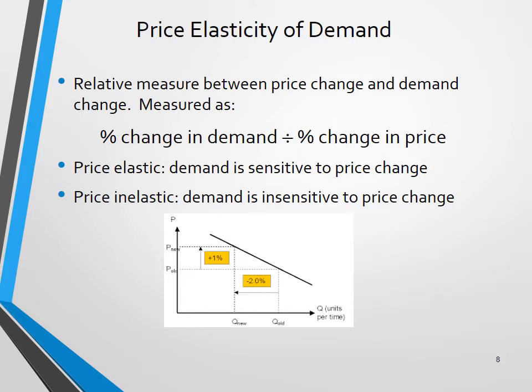On the flip side, if price increases by two percent and demand changes by only one percent, we say it is price inelastic. When looking at transportation, certain modes are more price elastic than others. By price elastic we mean that if the price rises, we likely move to some other mode of transport. For example, truck is more price elastic than rail. We will look into this elasticity concept in more detail in future slides.